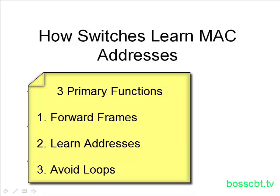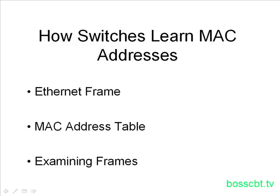Loop avoidance prevents a loop from happening on the network, because loops can be very detrimental to the functionality of a network. We'll start off by taking a quick look at an Ethernet frame and some of the important fields as they relate to learning MAC addresses, and then we'll take a look at the MAC address table on a switch and the process of how a switch examines a frame.